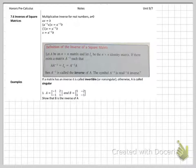Okay, 7.6 inverses of square matrices. Only square matrices have an inverse, and one of the properties is if I wanted to solve something, let's make it look a little easier. Let's say I wanted to solve 5x equals 10.